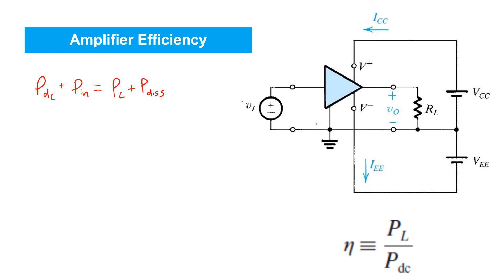Now, if an amplifier is efficient, it's going to be delivering almost all of the input power to the load. And to measure amplifier efficiency, we define symbol η as the ratio of power delivered to load over the total input power.